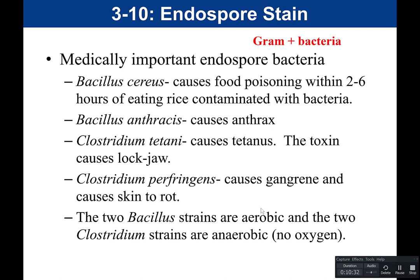Next is Bacillus anthracis, the cause of anthrax. There are several forms — cutaneous (skin) and pulmonary (lungs). Transmission often occurs through contact with animals. In 2001, there was an incident where someone mailed envelopes with Bacillus anthracis endospores sealed inside; when people opened the mail, they inhaled the spores and became sick with anthrax, and some people died. This was a form of bioterrorism — using living organisms as a form of terrorism.